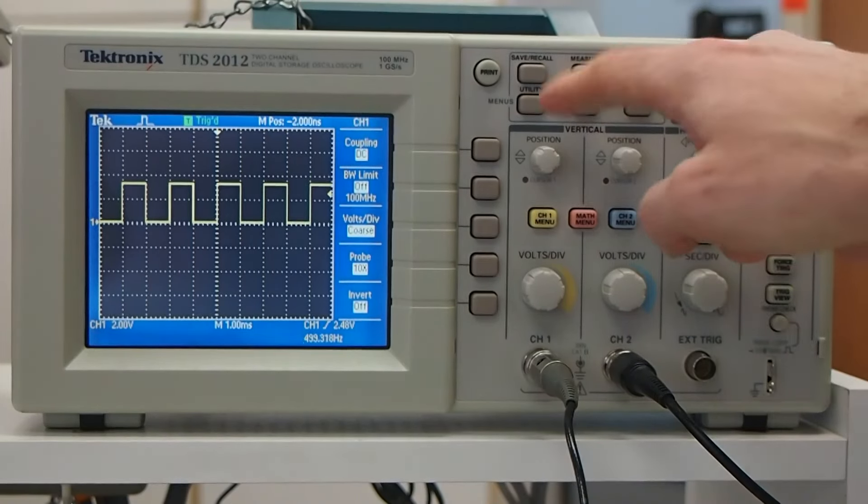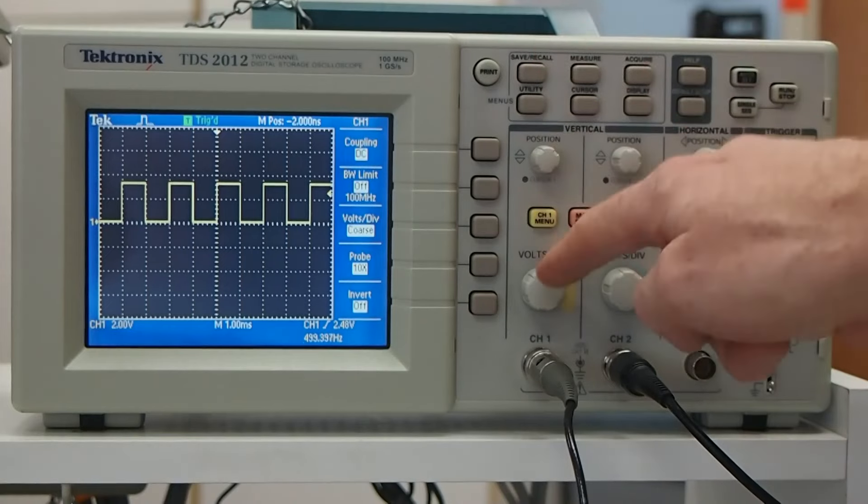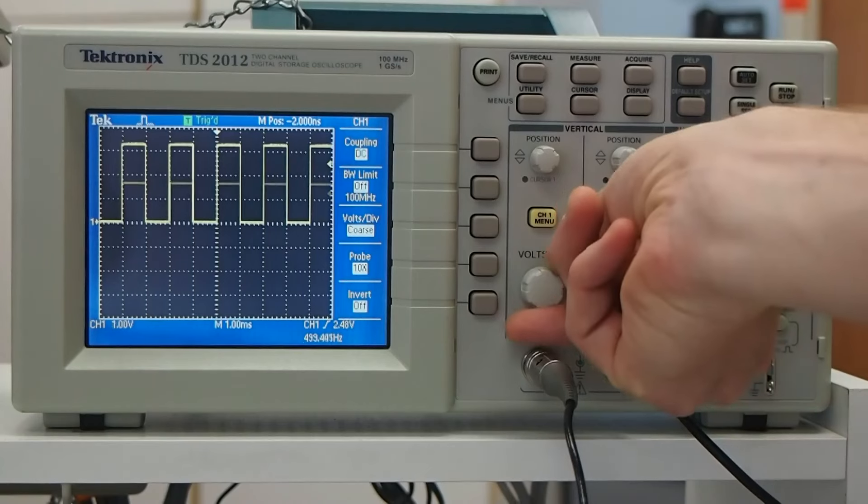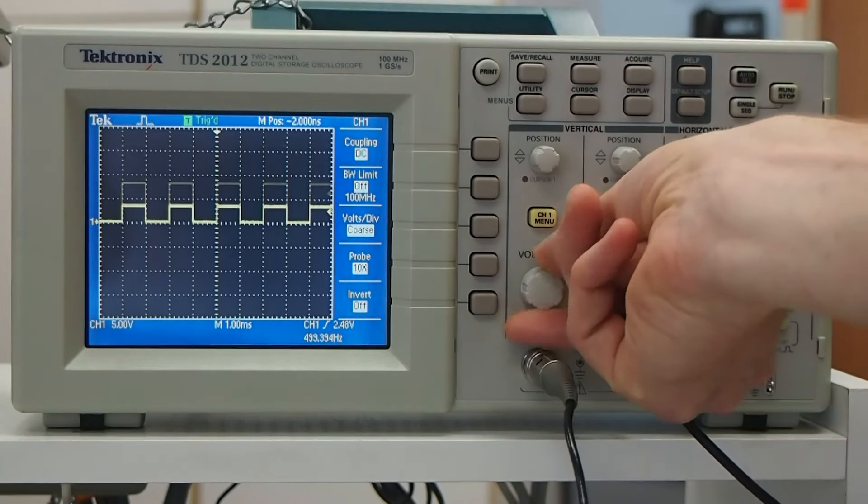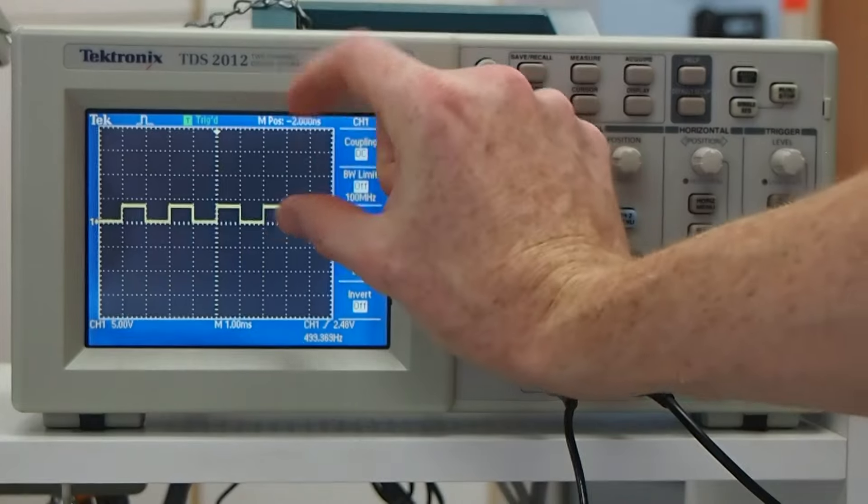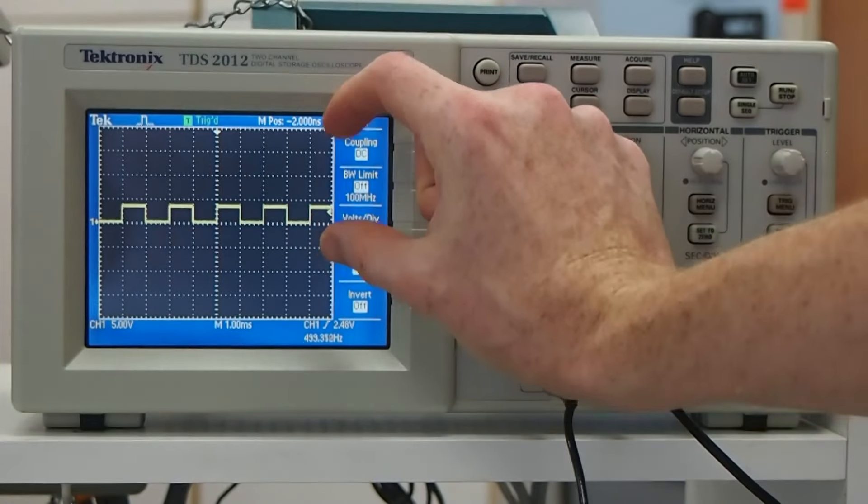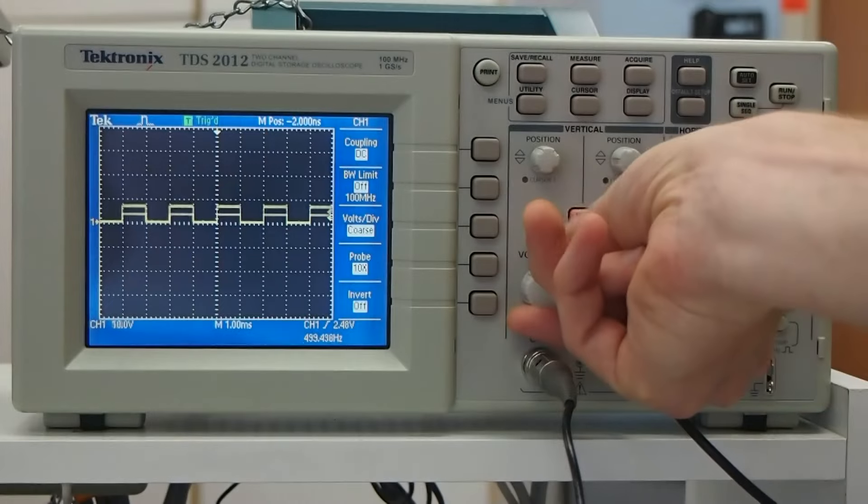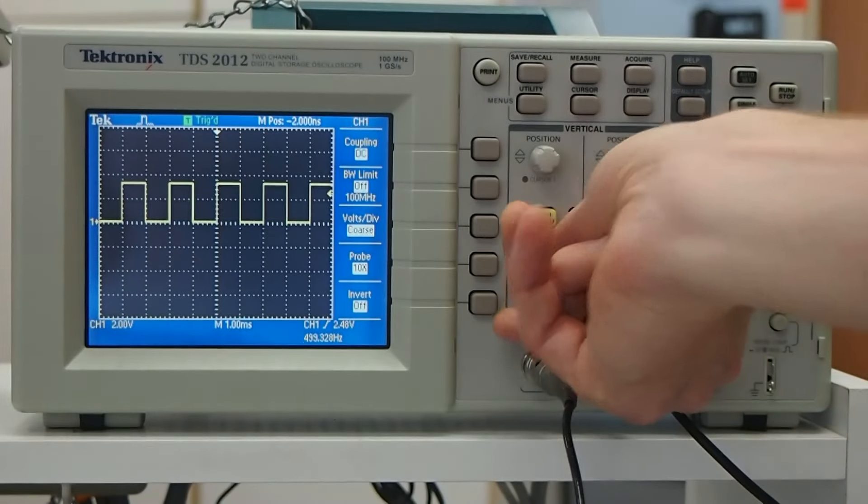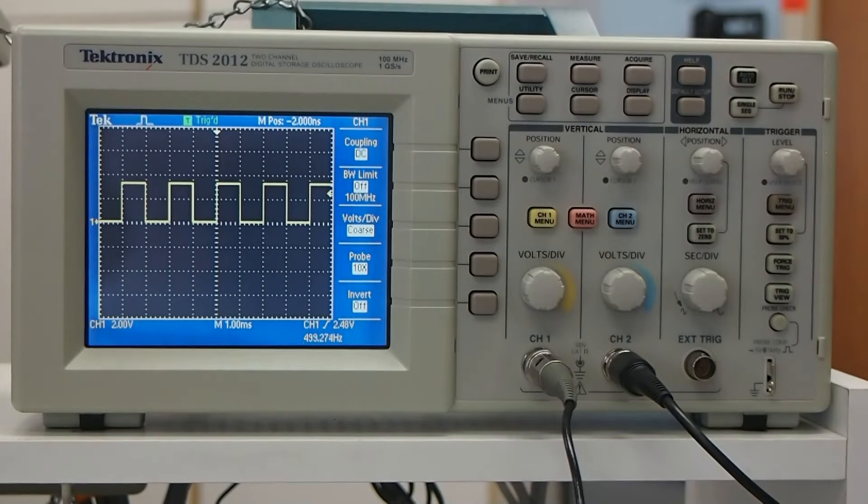Okay, so that's the vertical position control, or the vertical axis control. Again, mostly scaling here. So we can move down and say if we had much larger signals, we could look at the five volts per division or even 10 volts per division. But again, leaving it around two works pretty well for this kind of signals we're dealing with here.